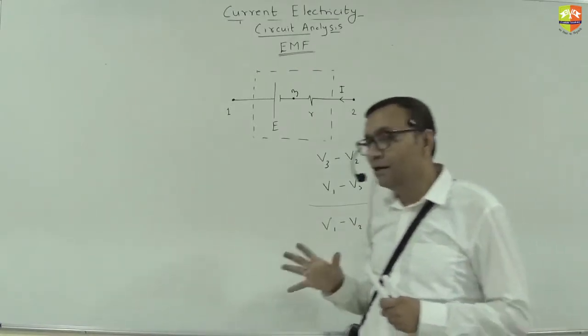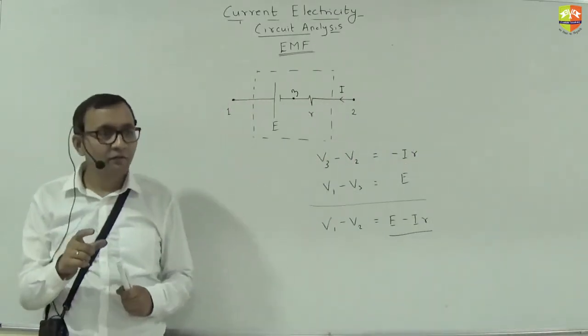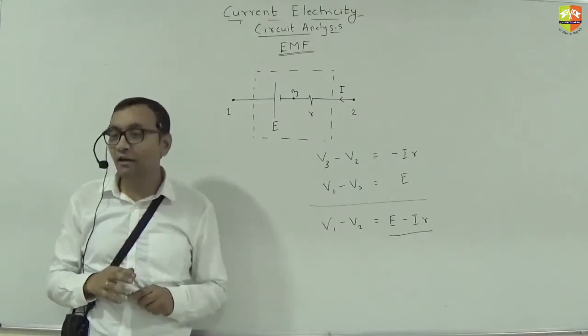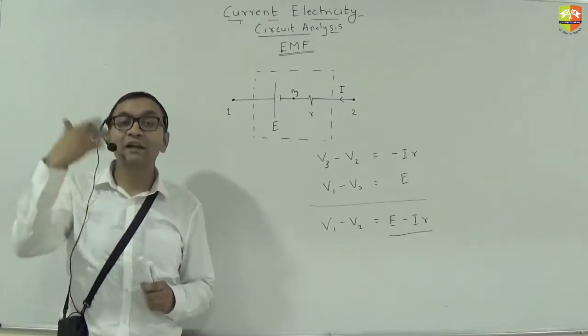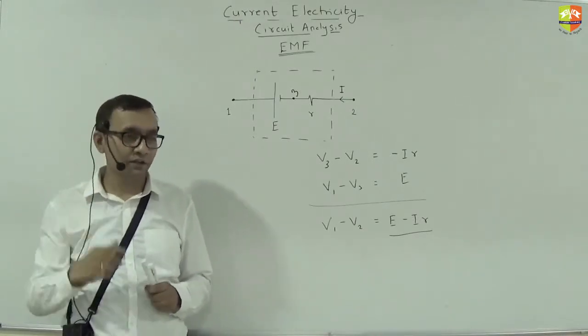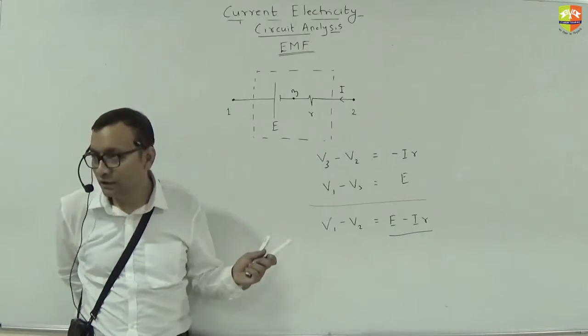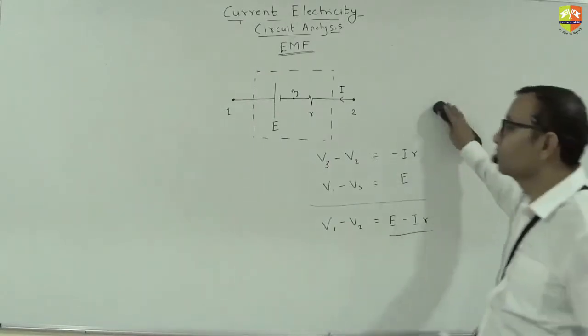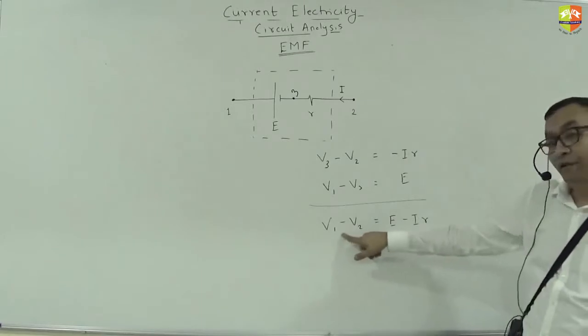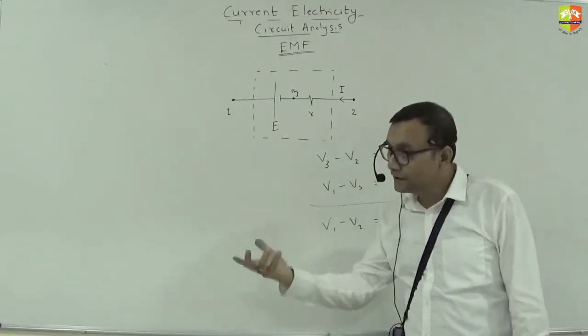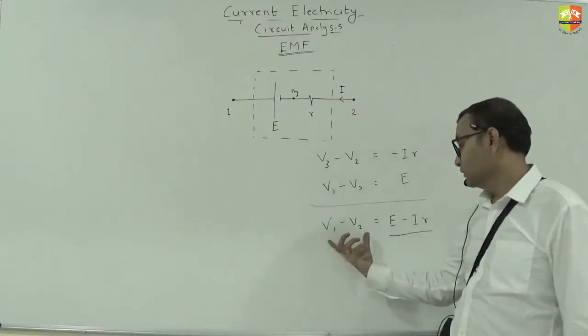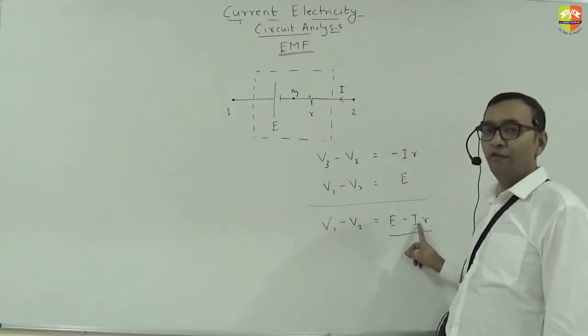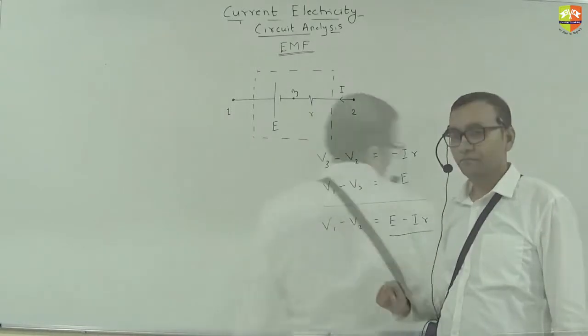Now we have learnt how to deal with single battery which has an internal resistance. Now we are going to deal with what if multiple batteries are there which are connected in series or parallel. What is the equivalent EMF and what is the equivalent internal resistance in both cases? This is the potential difference across the battery which you will experience in the circuit.